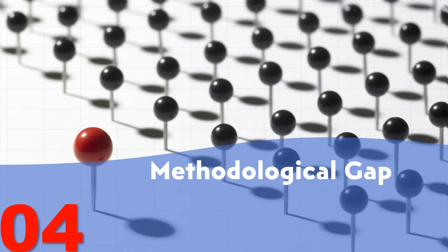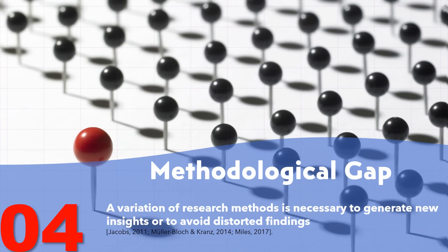The fourth category is the methodological gap, which deals with conflicts arising from the influence of methodology on research results. This gap addresses conflicts within research methods in prior studies and offers a new line of research divergent from those methods. For example, if a survey measuring people's happiness only has yes or no questions, it might miss the nuances of human emotions. A more detailed questionnaire could give better insights. In short, a variation of research method is necessary to generate new insights or avoid distorted findings.